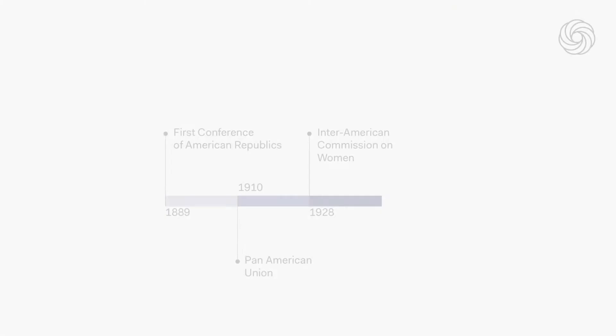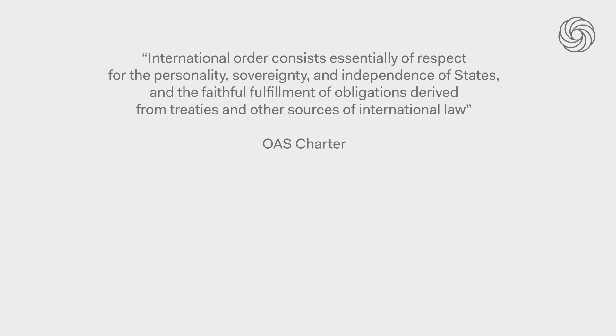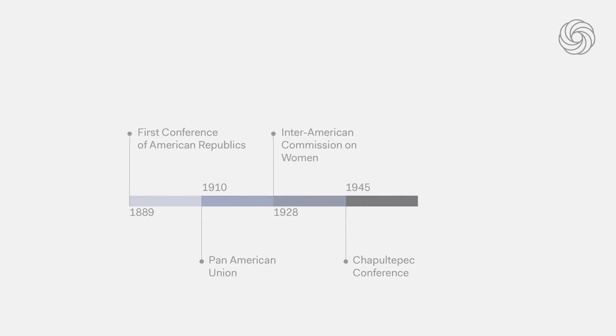By 1945, with the end of the Second World War, they met in Mexico at the Chapultepec Conference, and they had the very first discussions about setting up a human rights treaty and organs of international protection. But it would only be by 1948, with the adoption of the Charter of the Organization of American States, when they changed the name of the organization and shaped it into the organization that we know today, that they adopted the first instrument — which was the American Declaration on the Rights and Duties of Man.